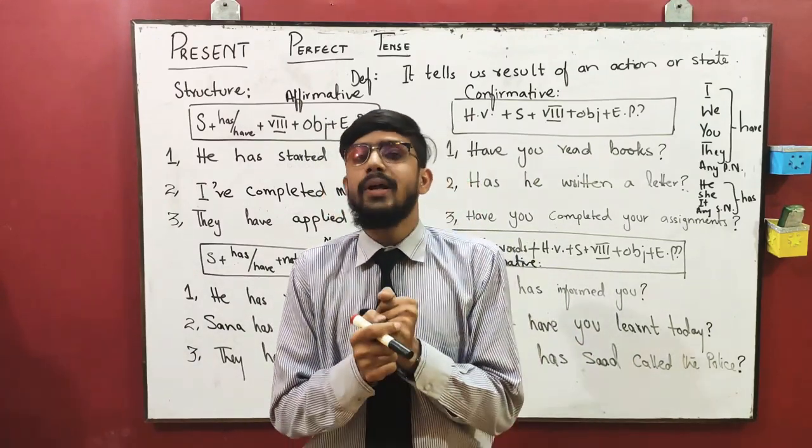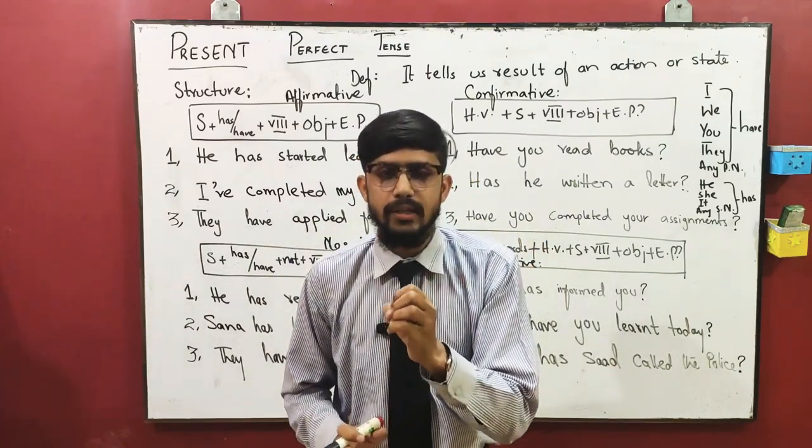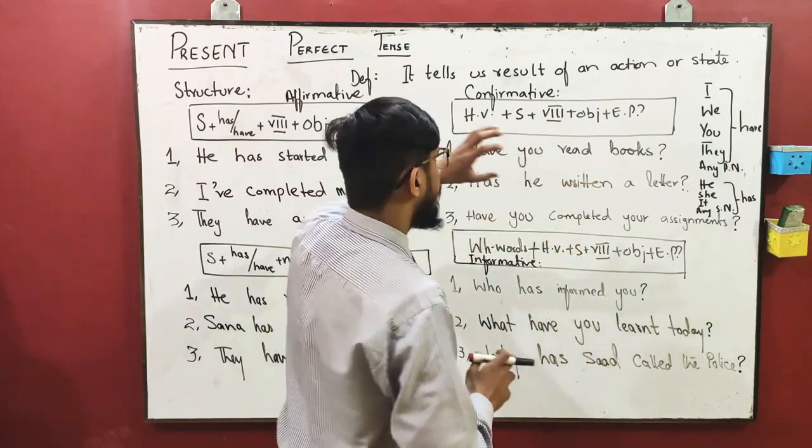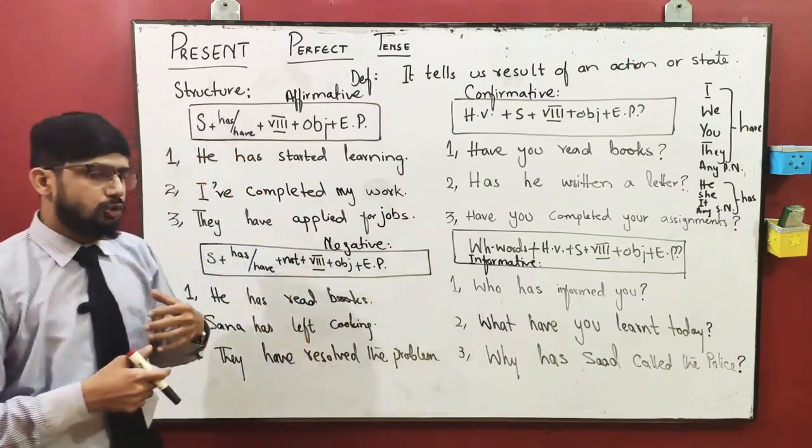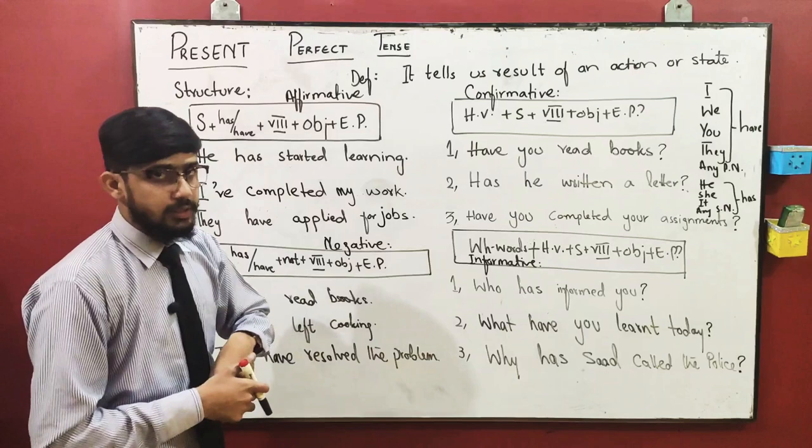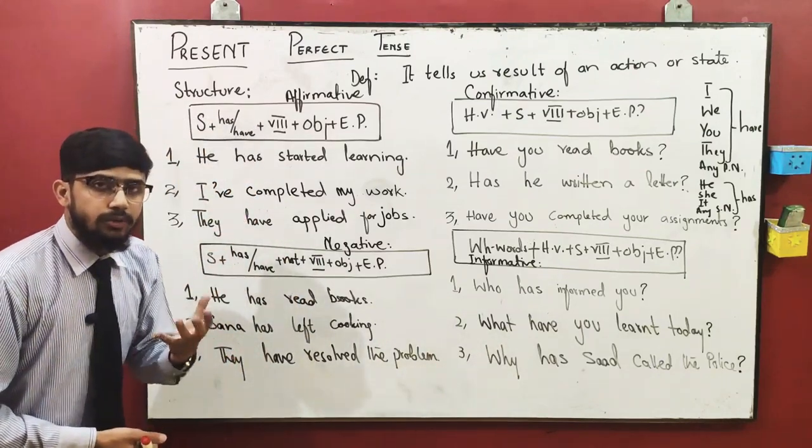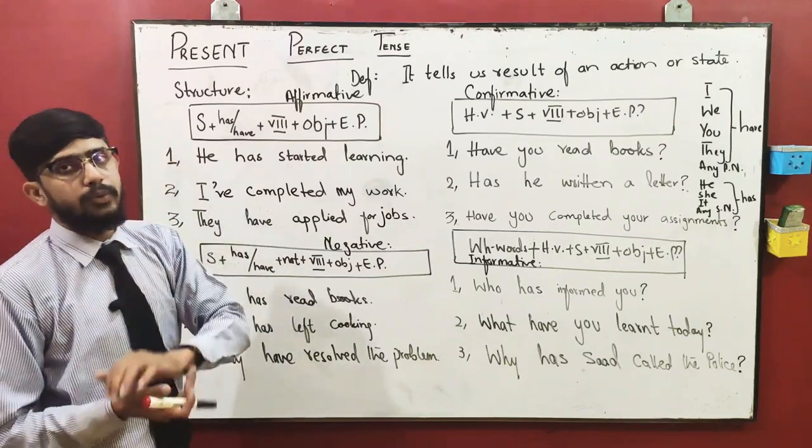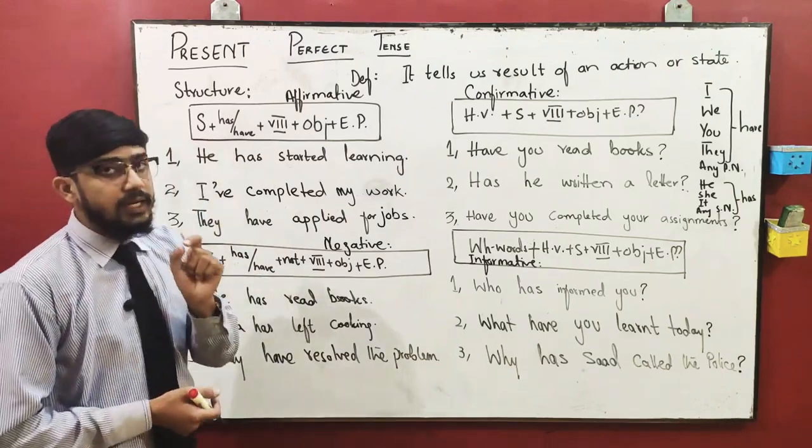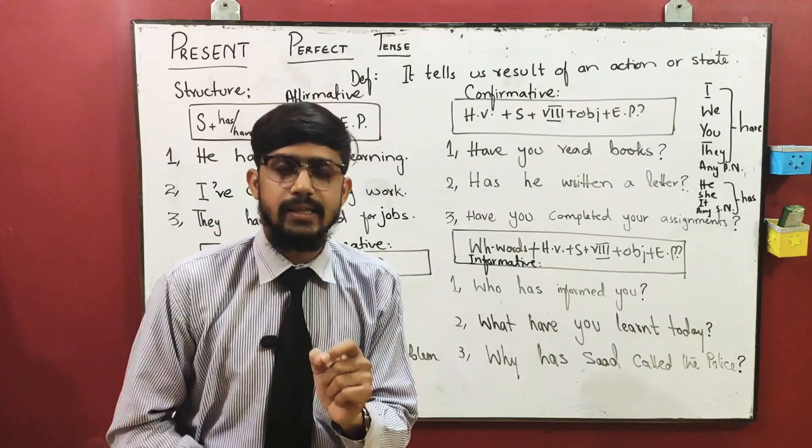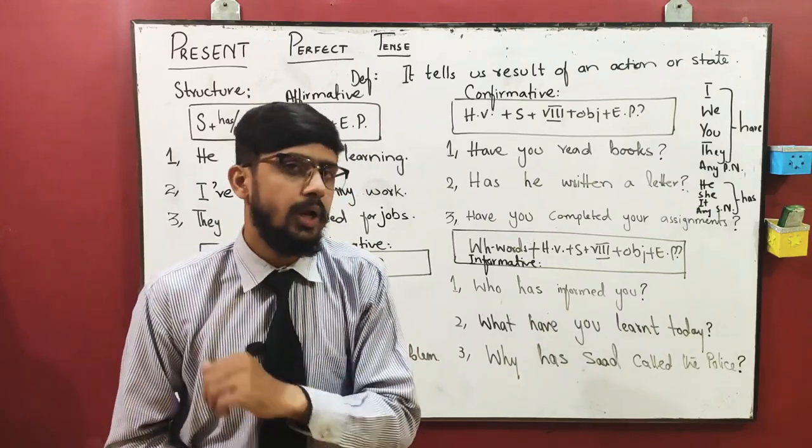Let's begin with its structures. How can we make this sentence? Let's come over here. The first sentence is, as usual, affirmative sentence - our simple sentence that states something. Structure is: subject first, afterwards has and have. Remember, has and have are the present perfect tense helping verbs.